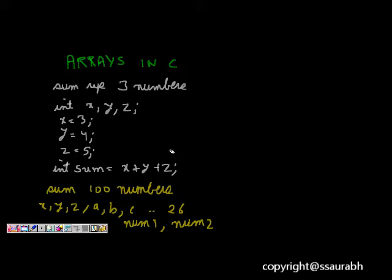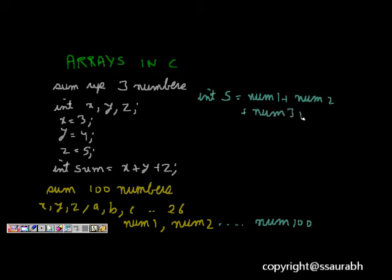What helps us, and even if we have, say we write like this till num100, so if I have to write now the summation, you can see how big it will become. My sum now will be int s is equal to num1 plus num2 plus num3 up to num100.